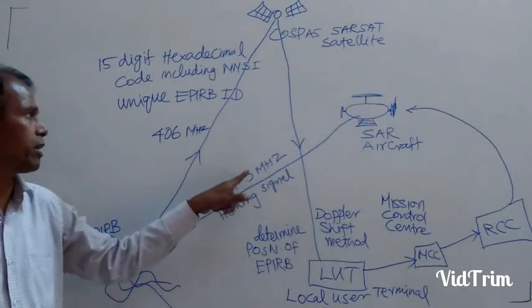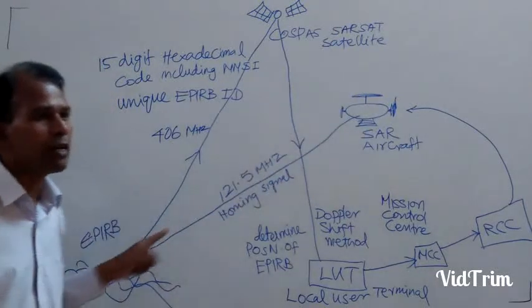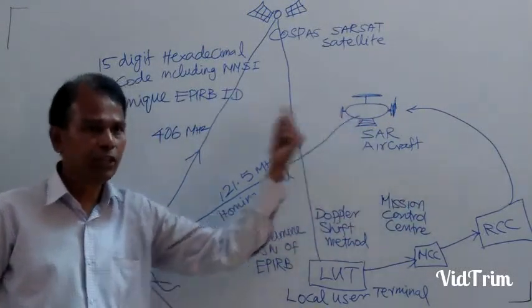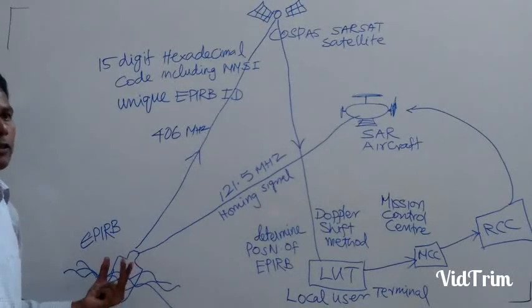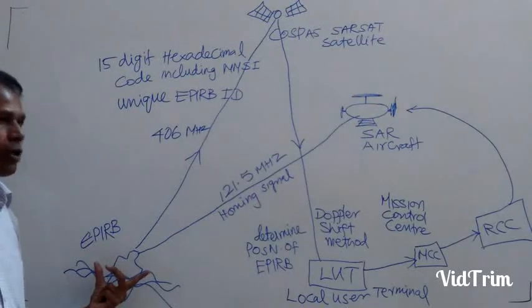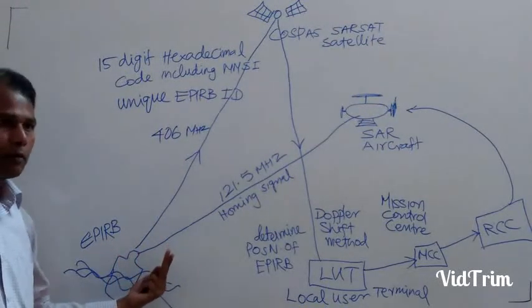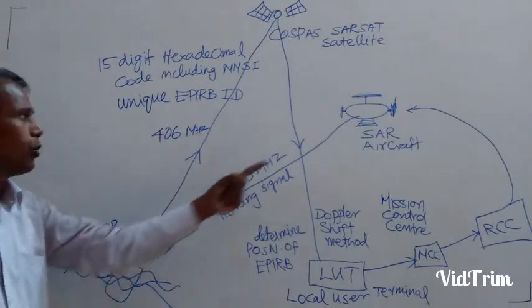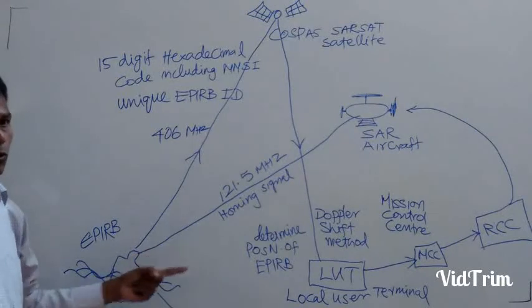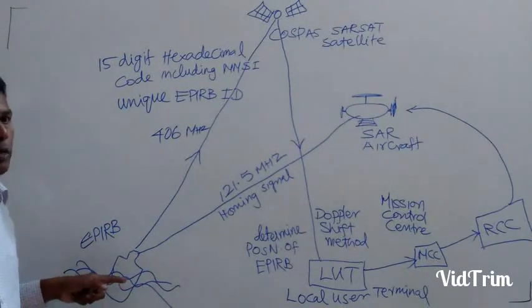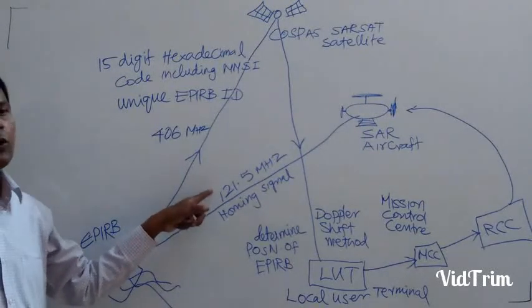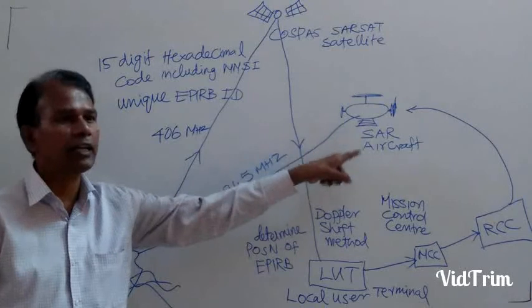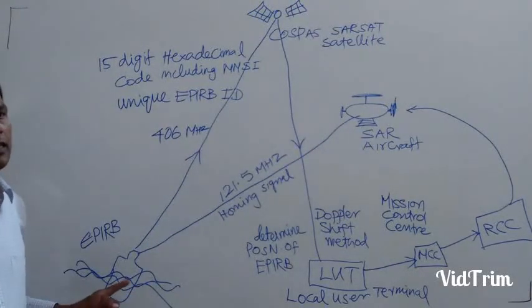What is transmitted on 121.5 MHz? Homing signal. So they can easily locate the position of survivors. See, the RCC arranges for the Search and Rescue team. When they are reaching that area, by that time the survivors in the survival craft, EPIRB and survival craft, they may be drifted to some other position. So when they are coming closer to this area, they can easily locate the position of EPIRB with the help of the 121.5 MHz. What is the use of this 121.5 MHz? It helps the Search and Rescue aircraft to locate the position of survivors during Search and Rescue.